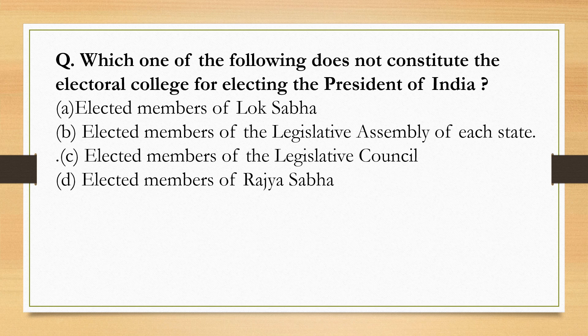Which one of the following does not constitute the Electoral College for electing the President of India? The President is elected indirectly. The Electoral College consists of: elected members of the Lok Sabha — correct; elected members of the Legislative Assembly of each state — correct; elected members of the Rajya Sabha — correct. However, elected members of the Legislative Council are NOT members of the Electoral College. So the correct option is Option C.